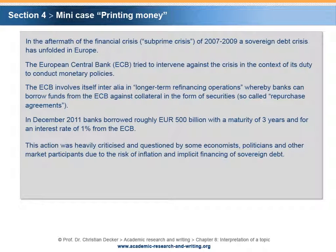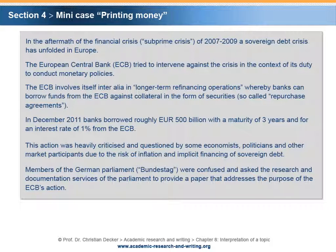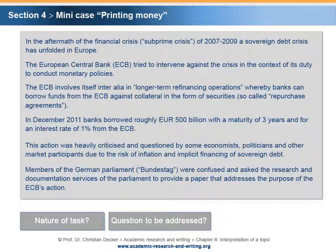This action was heavily criticized and questioned by some economists, politicians, and other market participants due to the risk of inflation and implicit financing of sovereign debt. Members of the German parliament, the Bundestag, were confused and asked the research and documentation services of the parliament to provide a paper that addresses the purpose of the ECB's action. What is the nature of the task? What is the question to be addressed? Please stop here and take five minutes to think about the two questions and write down short answers.